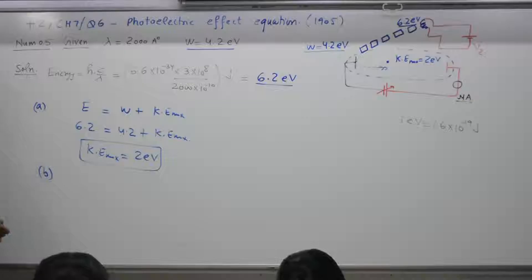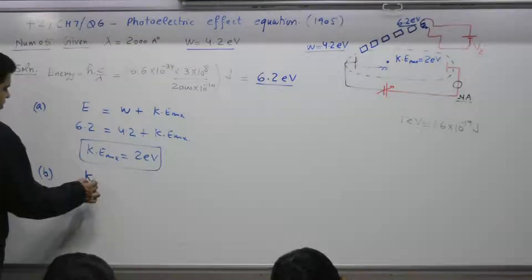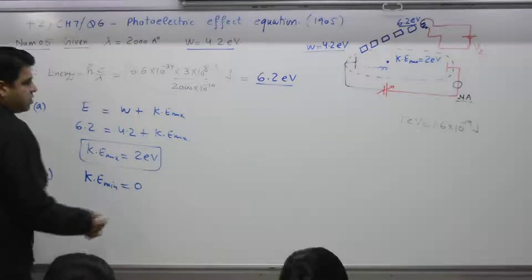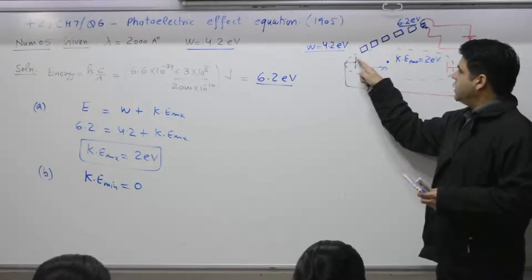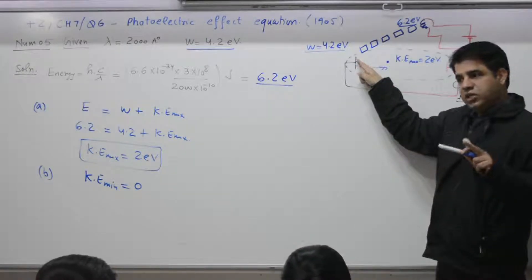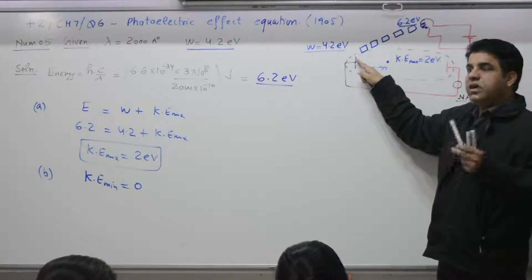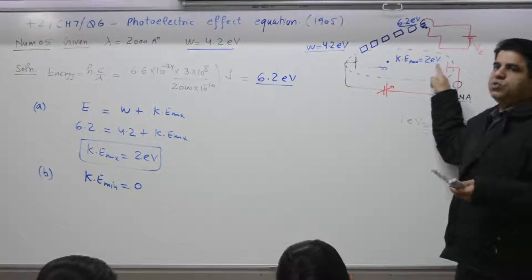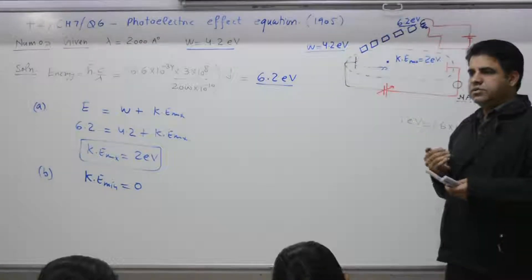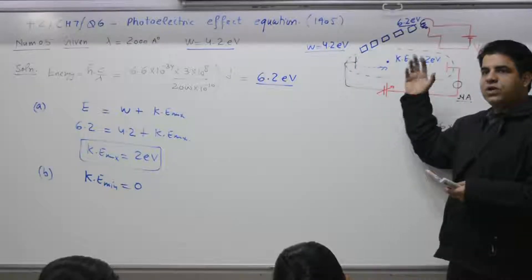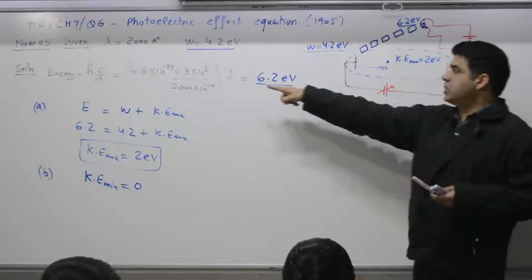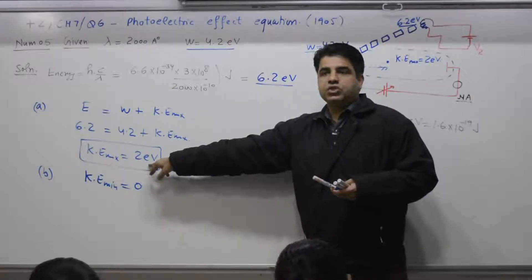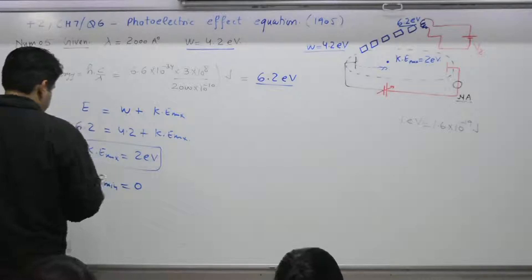Part B: slowest emitted photoelectron — kinetic energy minimum. The minimum value is 0. When a photon hits the surface and ejects an electron, the slowest electron just barely comes out with zero kinetic energy. Other electrons may have 1 eV, 1.5 eV; the topper has 2 eV. Like a distribution in a class from 0 to the topper — different electrons come out with different energies. So minimum kinetic energy is 0.